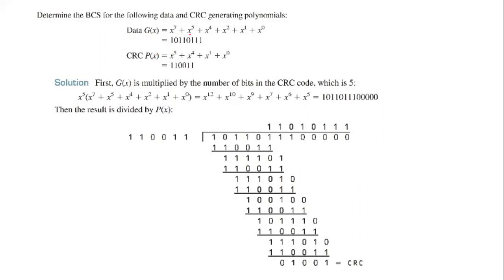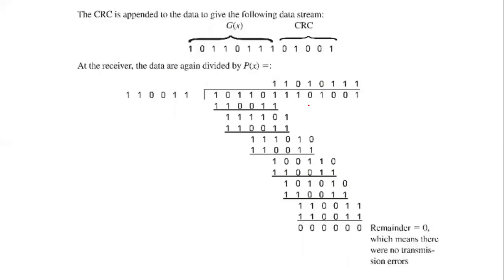Our data is 1011001. The polynomial is X raised to 7 plus 1, X raised to 6 plus 5 plus 1. The CRC is appended to the data to give the following data stream. At the receiver, the data is again divided. If there is any error, we will generate a non-zero remainder.